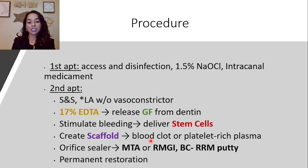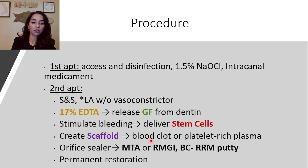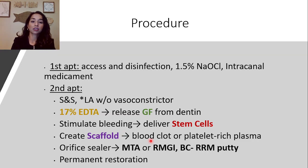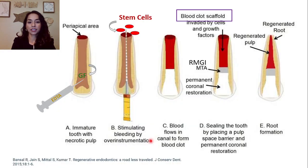Next, place an orifice sealer such as MTA, RMGI, or a bioceramic root repair material putty. Finally, ensure you have a permanent restoration to completely seal off the tooth from any potential bacteria.